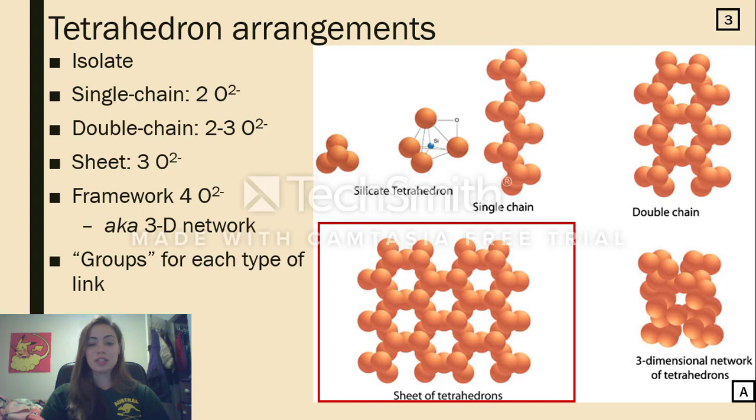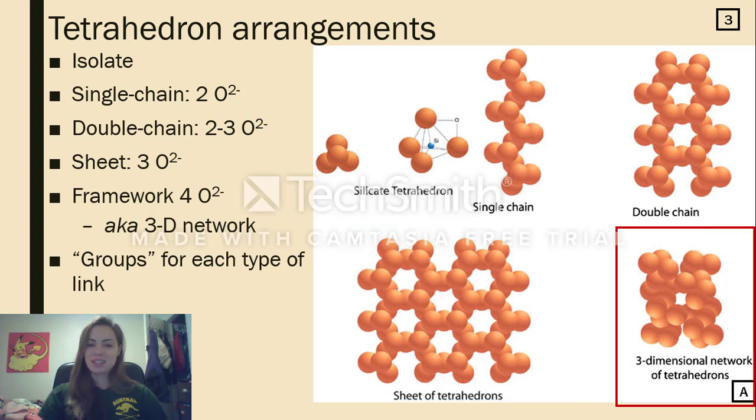The next is the sheets arrangement. This is when three oxygens are shared on every tetrahedron. And as you may have guessed, the framework is when all four oxygens on every silicon oxygen tetrahedron are shared. This is the most complex of all the arrangements because it creates a three dimensional structure, whereas the previous arrangements were only two dimensional.